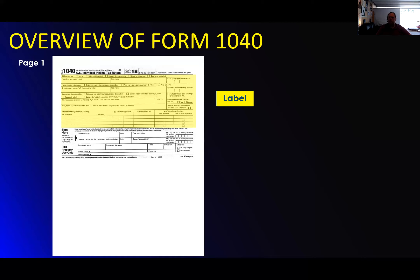On the very first page, just like it has been before, it's your personal information — the label information which lists all your dependents, your address, your children, your taxpayer information. This is the one where you want to make sure you get all the information correct. This is probably the most important part of the form, because if you mess up on this it's automatically rejected.